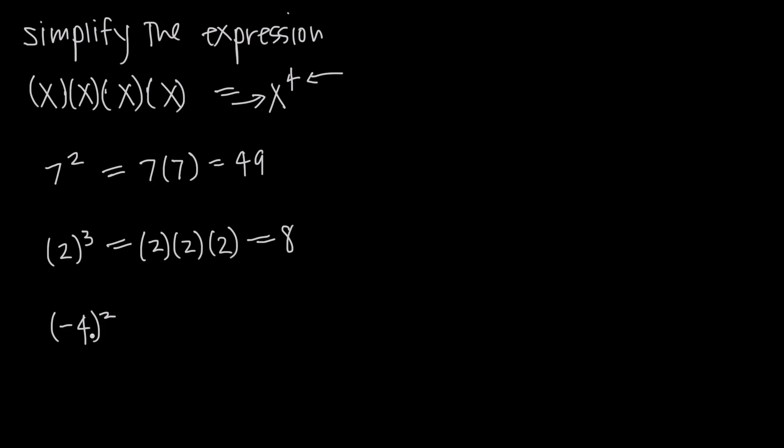We can also do this with negative numbers. This is negative four to the power of two, or negative four squared, and this says multiply negative four by itself two times, or multiply together two factors of negative four. So we have negative four times negative four.